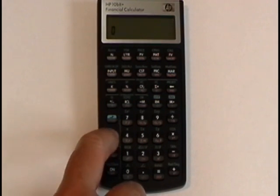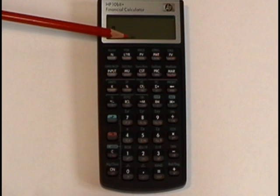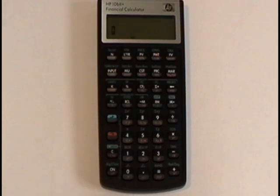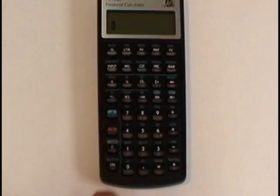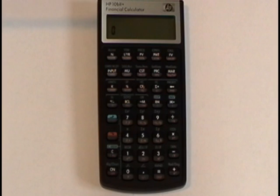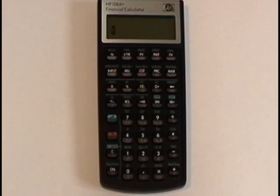So if I press the gold button and then press begin end, you'll see BEG shows up in the display. So I just put it in beginning mode. I do not want to be in beginning mode. So to take it out, same key press turns it off. So the point here being you do not want to see the word BEG in the display. That means that you are by default in end mode.